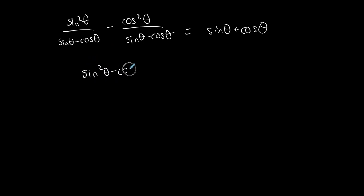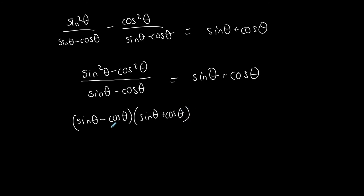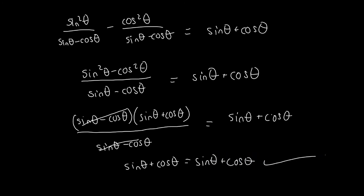(sin²θ minus cos²θ) over (sinθ minus cosθ) equals sinθ plus cosθ. This is a difference of squares in the numerator — it factors into (sinθ minus cosθ)(sinθ plus cosθ). That's a product of conjugates. Once I factor that, the (sinθ minus cosθ) cancels with the denominator, and I'm left with just sinθ plus cosθ on the left, which is exactly the same as sinθ plus cosθ on the right. Verified!